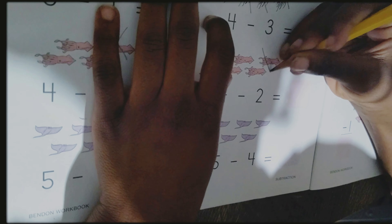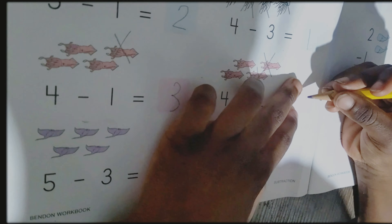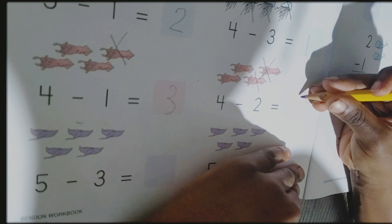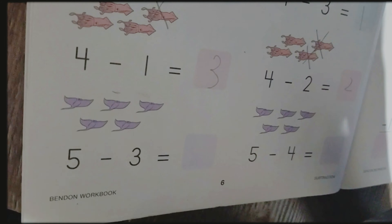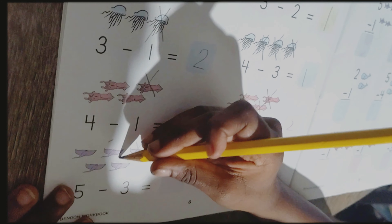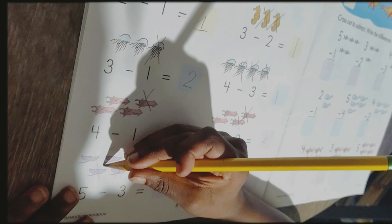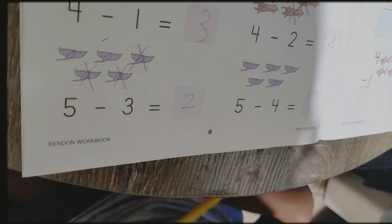Let's move here. We're crossing out two. One and two. How many do we have left? Three. Amazing. Now over here, crossing out three. How many do we have left? Two. Very good.